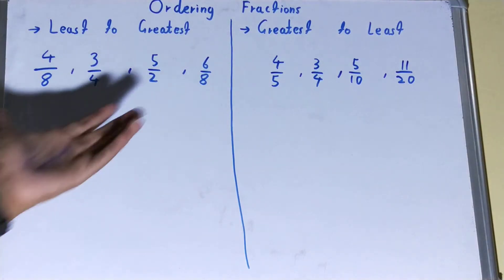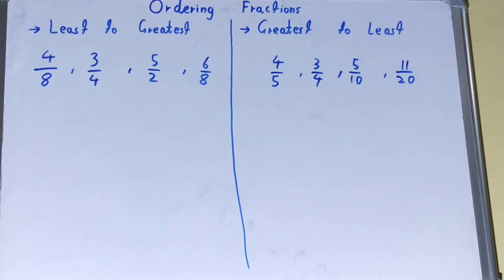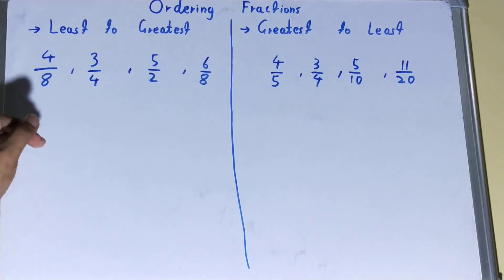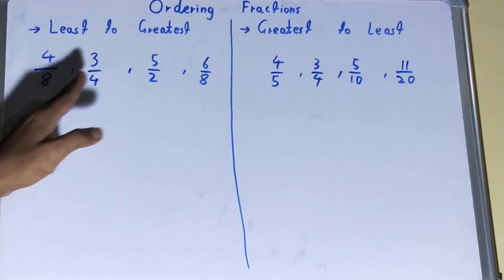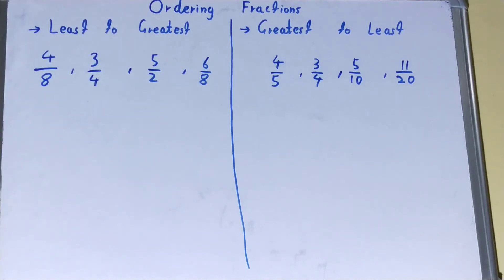We have four fractions for ordering. The technique is: first of all, we need to have a common denominator in all the fractions. We can see the various denominators we have are 8, 4, and 2. We need to find a common value for that — we can find the LCM of it.